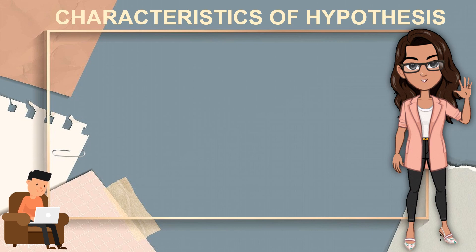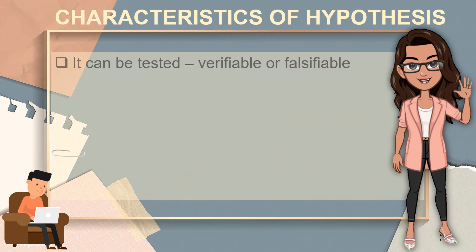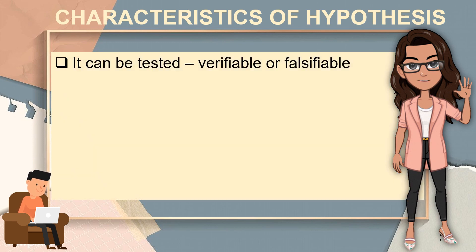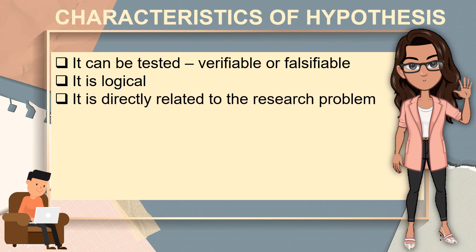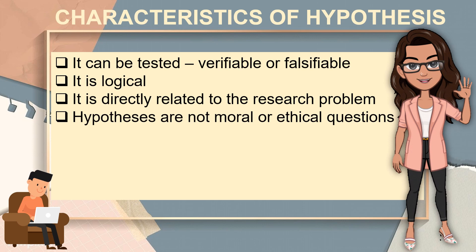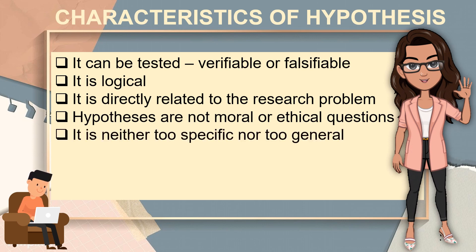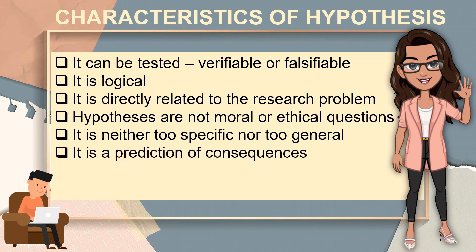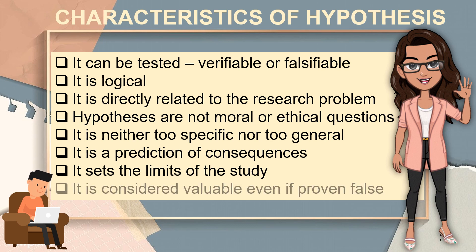What are the characteristics of a good hypothesis? These characteristics are according to Baraceros in 2019 and Prasad et al. in 2001. First, a hypothesis can be tested — whether verifiable or falsifiable. It is logical. It is directly related to the research problem. Hypotheses are not moral or ethical questions. It is neither too specific nor too general. It is a prediction of consequences. It sets the limits of the study. And it is considered valuable even if proven false.